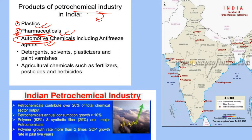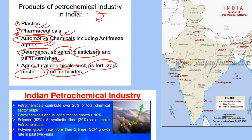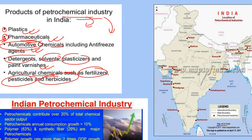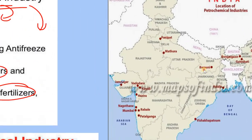Some petrochemical products include detergents, solvents, plasticizers, and paint varnishes — which are also petrochemicals. In agriculture, we have chemicals like fertilizers, pesticides, herbicides, etc. These are all part of the petrochemical industries.